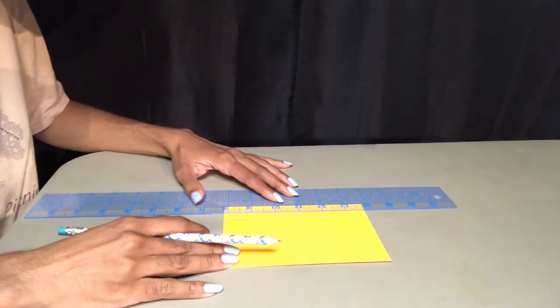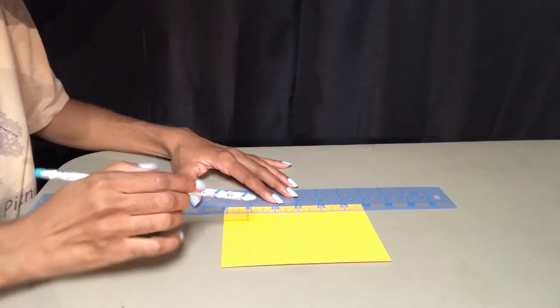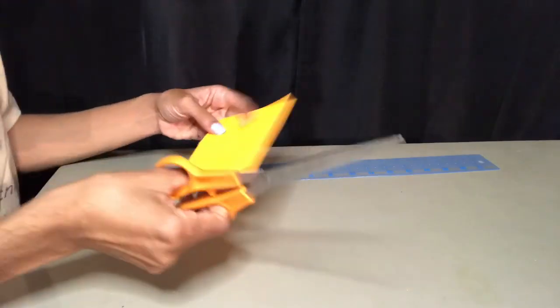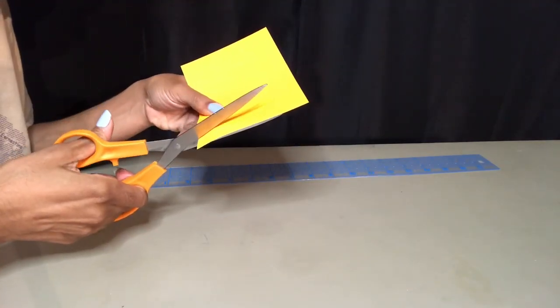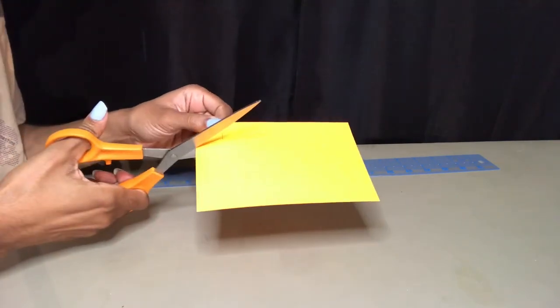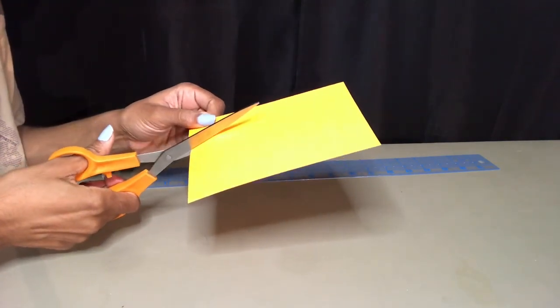And then I'm going to draw a line in the middle of the square for the fold line. And just cut it out. And this is going to be your template for your Bible tabs.